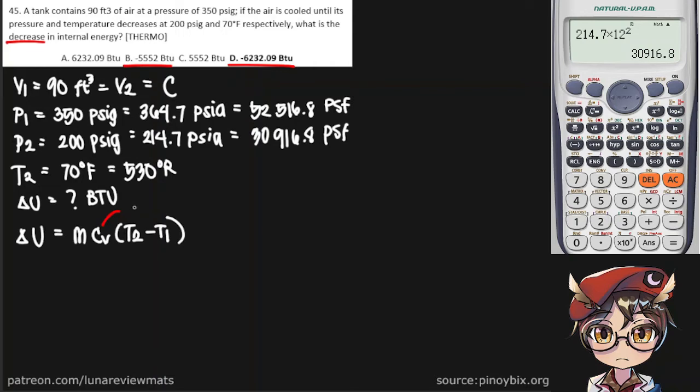We know that Cv is 0.171 BTU over pound degrees Rankine. This is for air. And of course, we're given T2. So we need to find our mass and our initial temperature first.